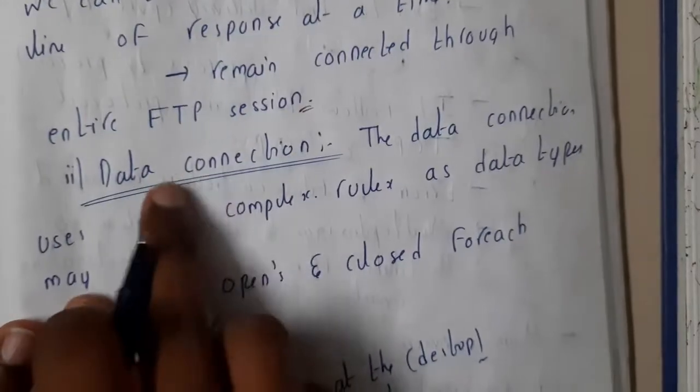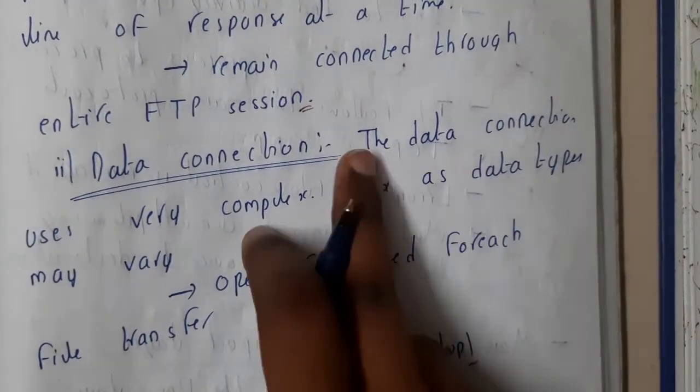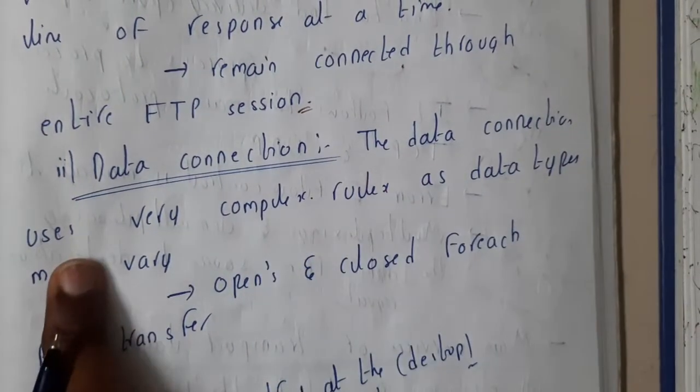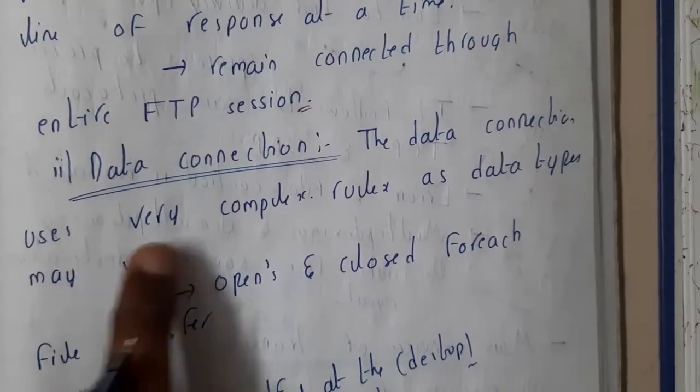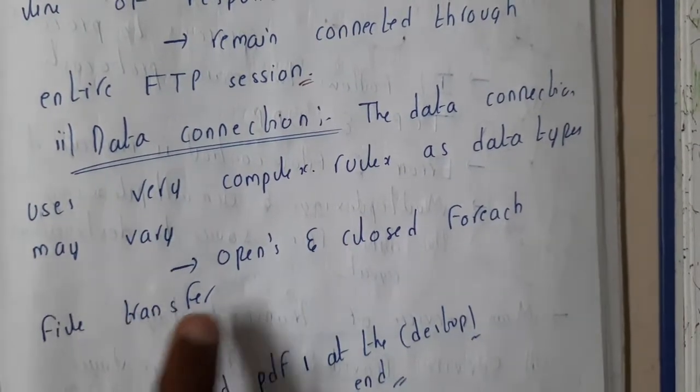Whereas in data connection you can transfer very complex data representations and all those things. The data connection uses very complex rules as data types may vary, so it opens and closes and transfers the files.